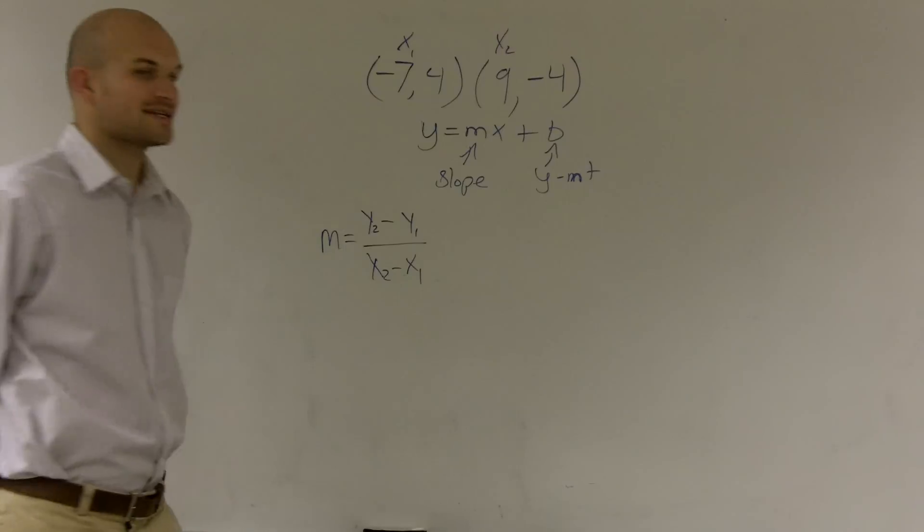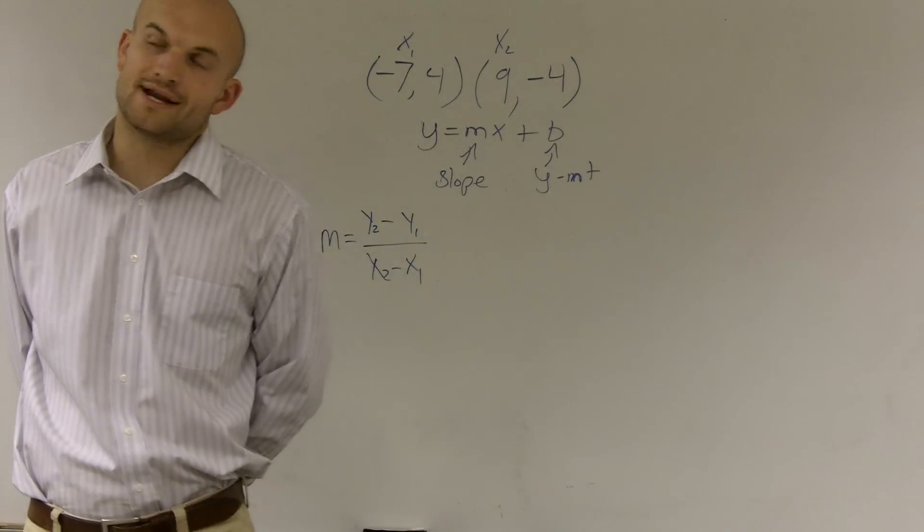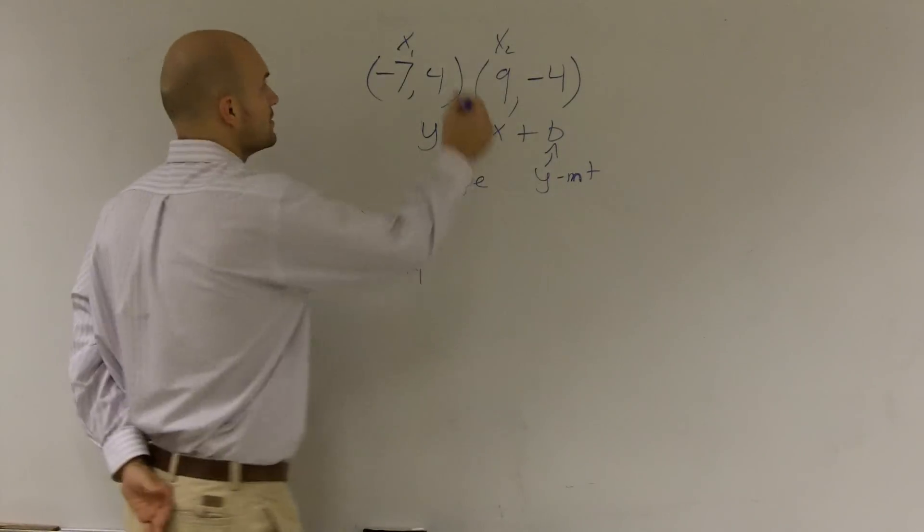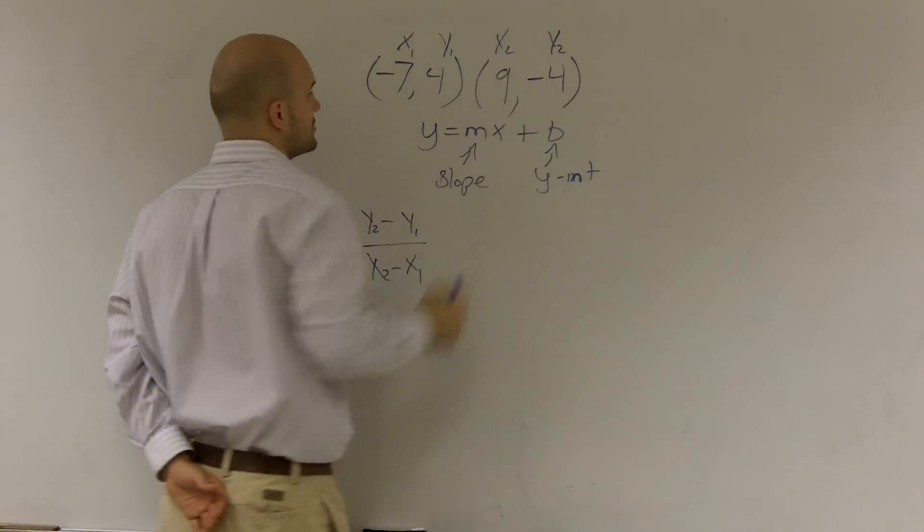And if you notice, those are both x-coordinates, but I'm going to label one x-coordinate 1 and the other one 2, just to distinguish between the two. So therefore, this is y1 and this one will be y2.